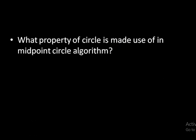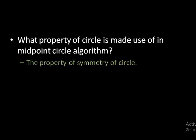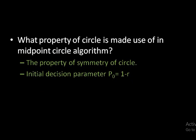First question: what property of a circle is made use of in the midpoint circle algorithm? The midpoint circle drawing algorithm uses the property of symmetry. One more thing to note is that the initial decision parameter p naught is equal to 1 minus r, where r is the radius of the circle.